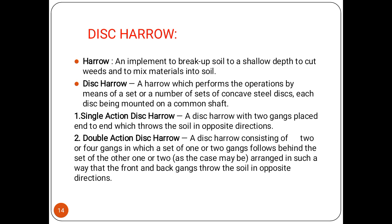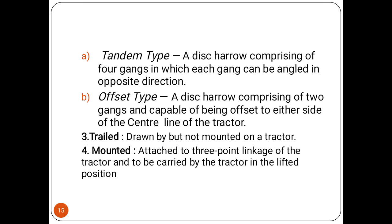The disk harrow is an implement to break up the soil to shallow depth, to cut the weeds, and to mix material into the soil. It performs its operation by means of a set or numbers of sets of concave steel disks, each disk being mounted on a common shaft. Single action disk harrow has two gangs placed end-to-end which throw the soil in opposite directions. Double action disk harrow consists of two or four gangs arranged so that the front and back gangs throw the soil in opposite directions. The tandem type disk harrow comprises four gangs in which the gangs are angled in opposite directions.